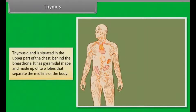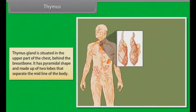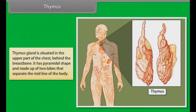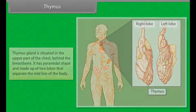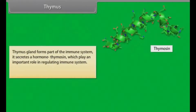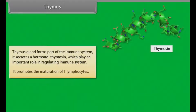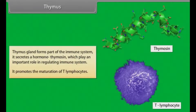The thymus gland is situated in the upper part of the chest behind the breastbone. It has a pyramidal shape and is made up of two lobes that separate at the midline of the body. The thymus gland forms part of the immune system and secretes a hormone called thymocin, which plays an important role in regulating the immune system and promotes the maturation of T-lymphocytes.